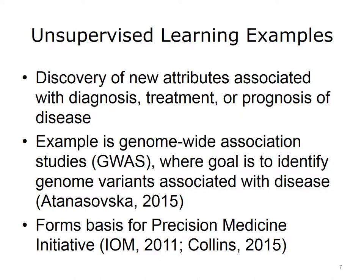A common use of unsupervised learning is the discovery of new attributes that may be associated with clinical questions, such as diagnosis, treatment, or prognosis of disease. An example of unsupervised learning is the Genome-Wide Association Study, or GWAS, where the goal is to identify genome variants that might be associated with a particular disease. These types of investigations form the basis of precision medicine, where the goal is to identify causes and factors associated with the disease more precisely, and develop more targeted treatments.